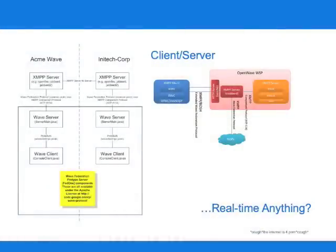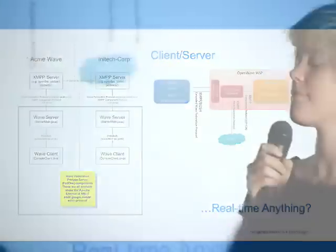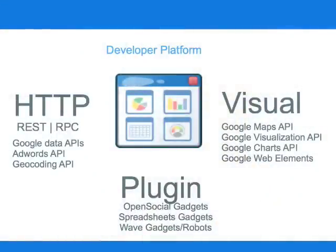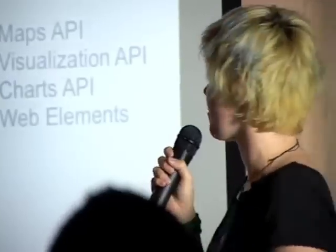In order to let people create full wave clients, we also need to open source the client-server protocol. And we're trying to open source as much of our JavaScript client as we can, so that people across different wave servers could still have a consistent user experience. Now let's get to the favorite part — the part that has to do with mapping. That's the developer platform. At Google, we know that making an extensible developer platform is really important, because we've seen the way that developers have used APIs to extend iGoogle and Maps beyond anything we imagined.